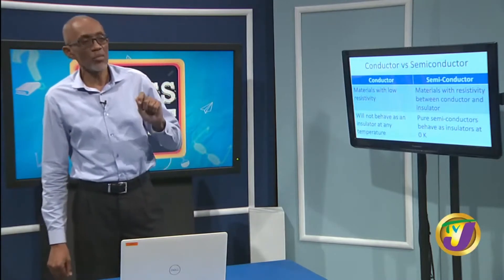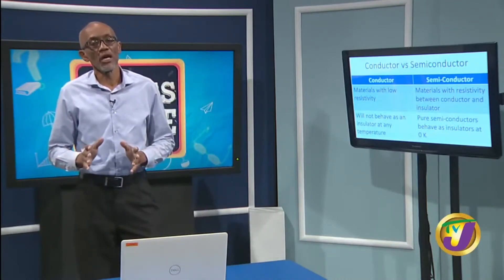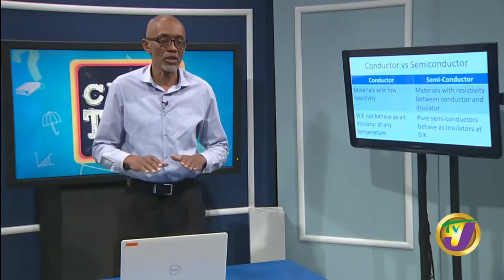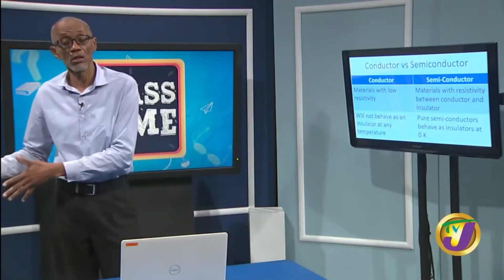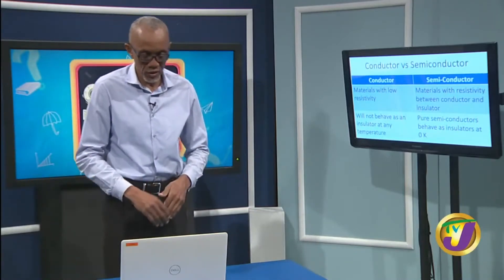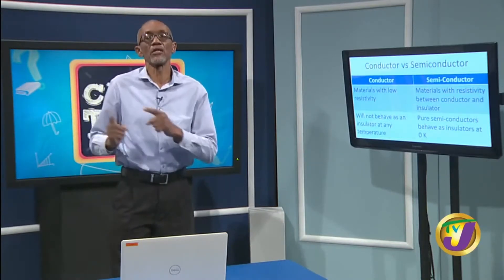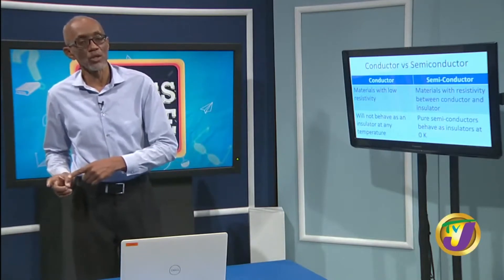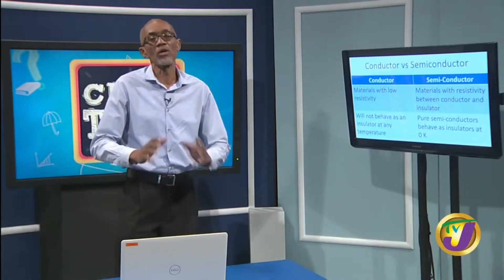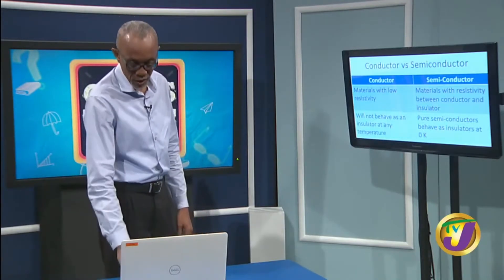Conductors will not behave as an insulator at any temperature — no matter what temperature you put a conductor, it does not change its conducting properties. What happens is when you carry a conductor to near absolute zero, it becomes a superconductor and has zero resistance. Pure semiconductors, however, behave as insulators at absolute zero of temperature. So this is a critical difference between conductors and semiconductors: if you carry a semiconductor to a temperature near absolute zero, it will behave as an insulator.